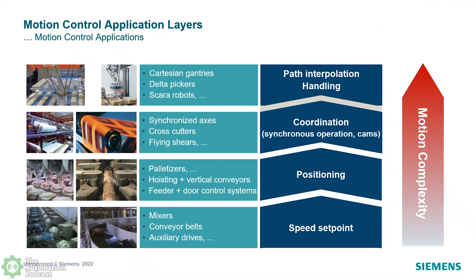When we move up in terms of complexity, you start to have coordinations where axes are working together — either one axis or multiple axes completing some kind of task. Applications like crosscutters and flying shears are more high-speed, involving multiple synchronous axes working together.